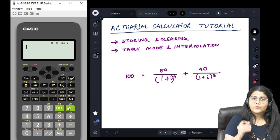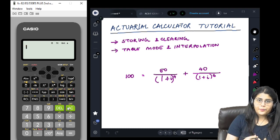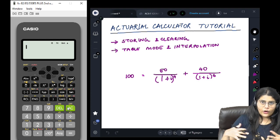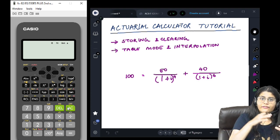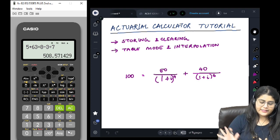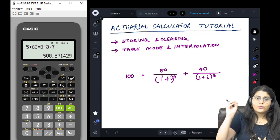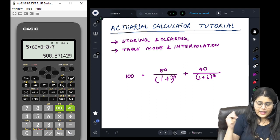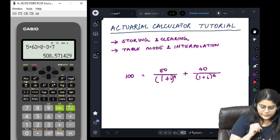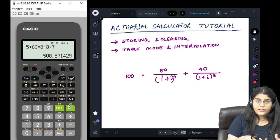Now let's see how to store values. For example, in long questions, when you are solving long questions, at every step you are getting a new value which you have to fit into a final equation to get your answer. Let's say I'm performing a calculation: 5 times 63 divided by 8 minus 3 times 7.